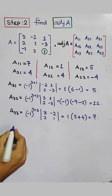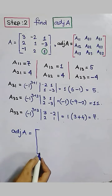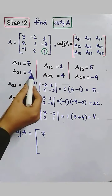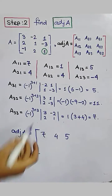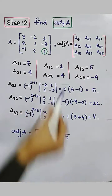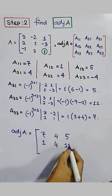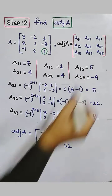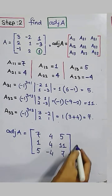Now we have all values of adjoint A. Write down adjoint A: the matrix is [A11, A21, A31; A12, A22, A32; A13, A23, A33] equals [7, 4, 5; 1, 4, 11; 5, minus 4, 7].